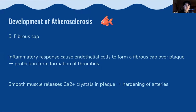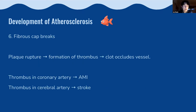Next, fibrous caps form: the inflammatory response causes endothelial cells to form a fibrous cap over the plaque as a protective mechanism to stop thrombus formation. Smooth muscle releases calcium crystals into the plaque, leading to hardening of your arteries. The last step is rupture of the fibrous cap — plaque rupture causes thrombus formation and vessel occlusion. If a thrombus occurs in a coronary artery, that leads to an AMI; in a cerebral artery, you get a stroke.